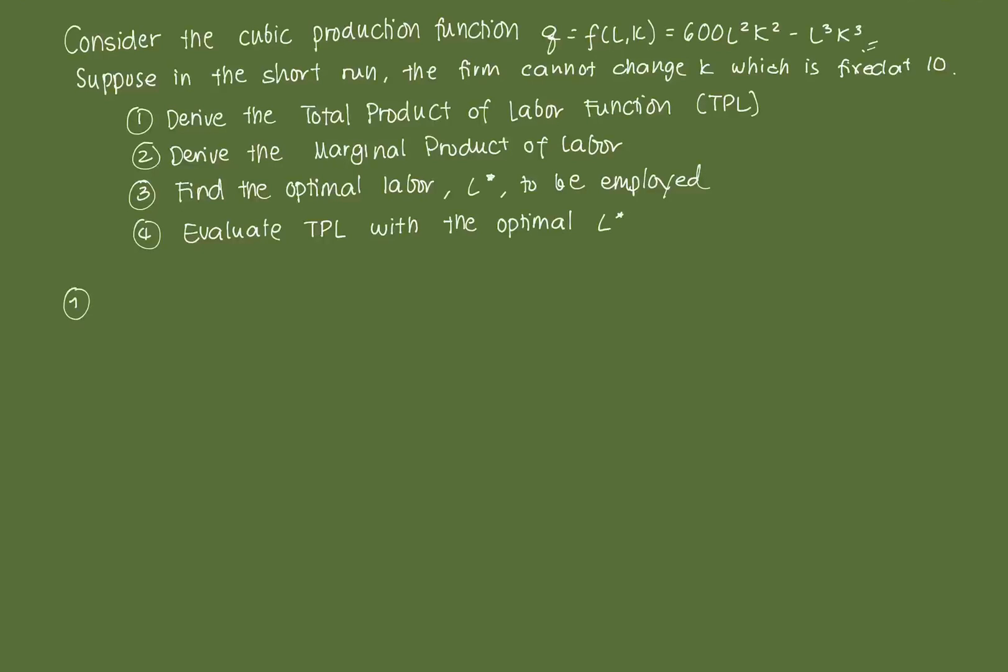Let's start by first deriving the total product of labor function. The total product of labor function is essentially our production function plugging in our fixed amount of capital. In this case, we plug in our fixed number of capital, which is 10. So we plug that in F(L,10). That's equal to 600 L squared times 10 squared minus L cubed times 10 cubed.